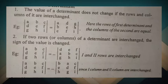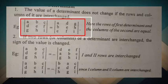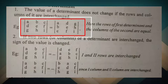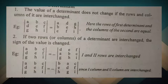For example, if we have elements a, b, c in the first row, and d, e, f in the second row, and g, h, i in the third row — and we interchange the rows and columns — the determinant value calculated will remain the same number. That is the first property.